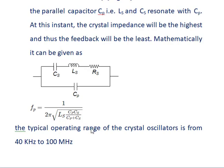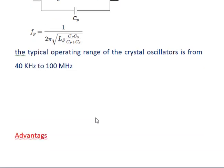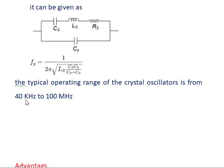This crystal oscillator operates in the range of 40 kilohertz to 100 megahertz, generating output oscillations with a constant frequency in that range.